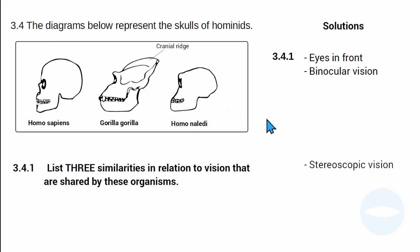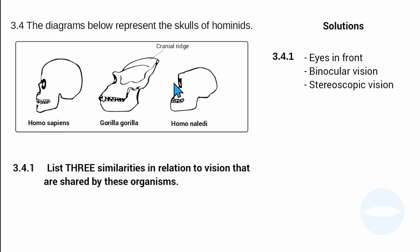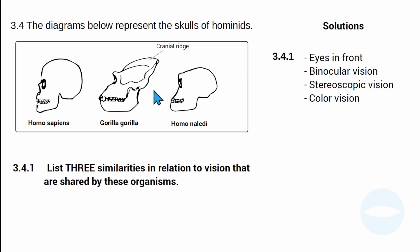Third, they have stereoscopic vision — they are able to perceive three dimensions even when looking at a two-dimensional image, because the brain processes the input from both eyes to create depth. Fourth, they have color vision because they have cones in the retina that differentiate between colors. All these organisms share these visual characteristics.